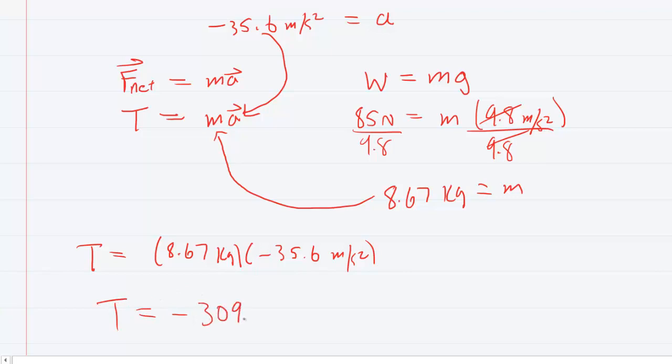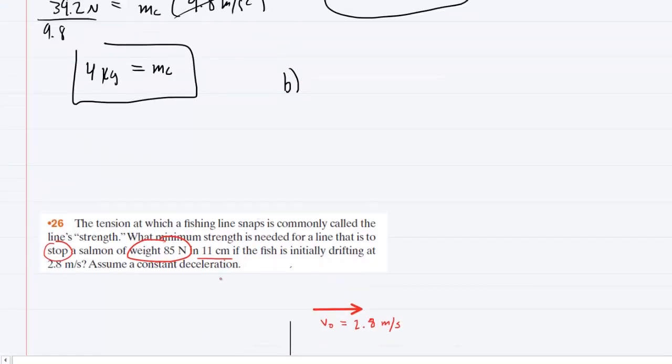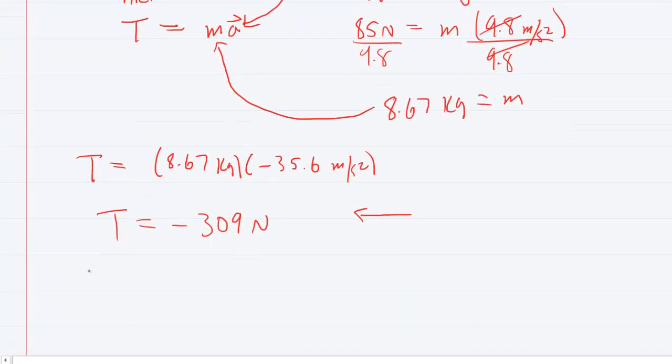You'll notice it comes out negative. That's because we assumed the tension was pulling back to the left on the fish. Let's see if they want the negative sign or not. They want the minimum strength, so probably just the magnitude is what you need. So we'll say that the tension is 309 newtons.